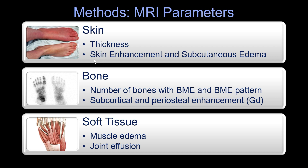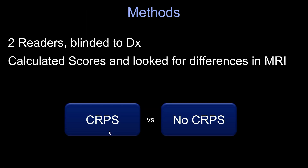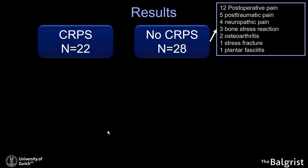We looked at skin thickness, skin enhancement, edema, bone marrow edema pattern and number of bones with bone marrow edema, subcortical and periosteal enhancement — as seen in bone scan images, which is believed to be diagnostic for CRPS — and also soft tissue edema and diffusion. Two readers looked at this. In the end, we had 22 CRPS type 1 patients and 28 non-CRPS patients.